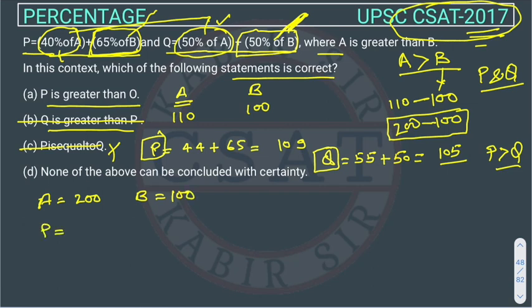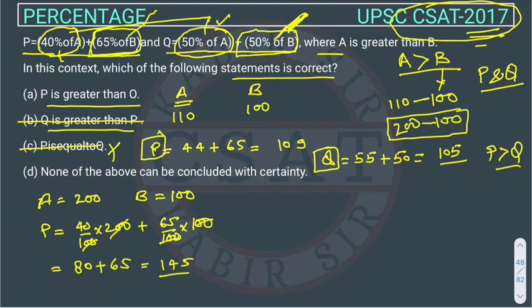What will be P here? P will be 40% of 200 plus 65% of B. It will be 80 plus 65 equals 145. What will be the value of Q here from this?